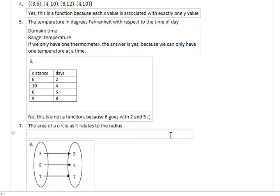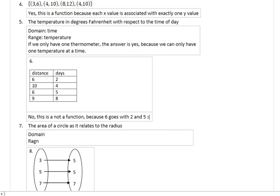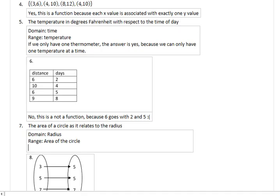Number 7: The area of a circle as it relates to the radius. Domain is the radius, range is the area of the circle. Our question is: given a particular radius, can the area of the circle be more than one measure? And the answer to that is no, which makes this a function. We can only have one area associated with one radius.